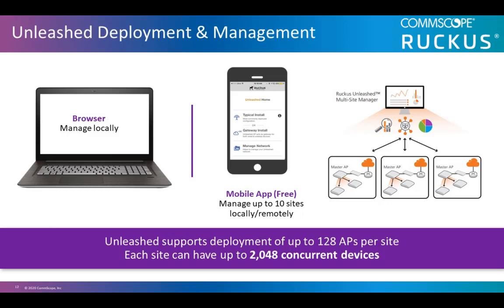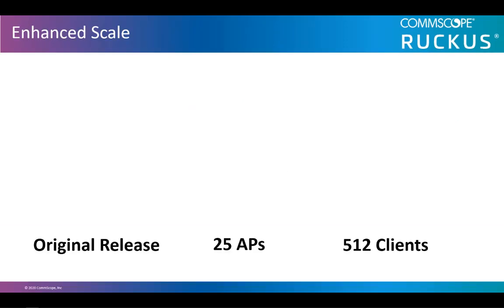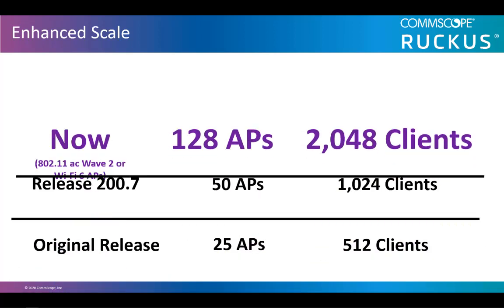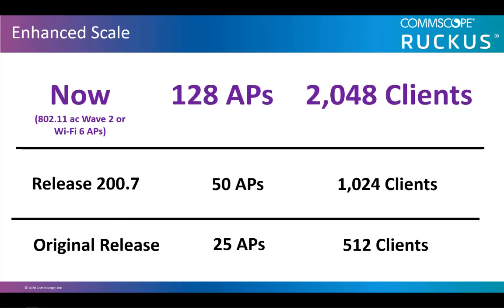For expanding to multiple sites, our Unleashed Multi-Site Manager comes into play. Here is a summary of how CommScope Unleashed has increased the number of APs and clients. The original release supported up to 25 APs and 512 clients. As of release 200.7, this was increased to up to 50 APs and 1,024 clients. Now, with this 200.8 release, we support up to 128 APs and 2,048 clients using 11AC Wave 2 or Wi-Fi 6 APs.